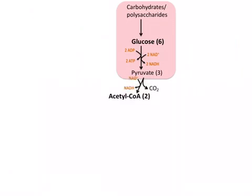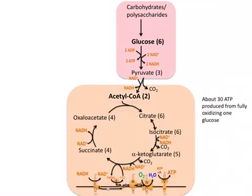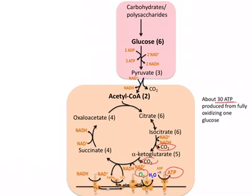Most of the pyruvate from glycolysis is converted to acetyl-CoA by pyruvate dehydrogenase. This is an oxidative decarboxylation — we produce NADH and CO2 comes off, so three-carbon pyruvate has gone down to two-carbon acetyl-CoA. This acetyl-CoA can be fully oxidized in the TCA cycle to produce CO2, with the NADH and FADH2 re-oxidized in the electron transport chain using oxygen to produce ATP. From fully oxidizing one glucose, we get somewhere around 30 ATP produced.